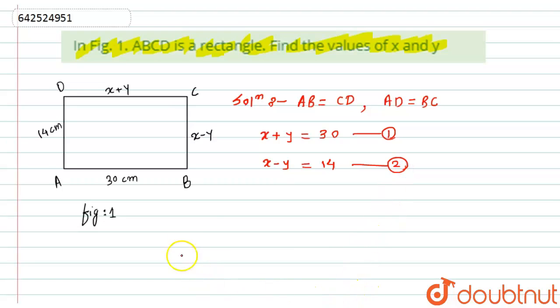Now after adding this equation number one and two, what we will get is twice x equals 44. So here I will get the value of x as x equals 44 divided by 2, which will be equal to 22 centimeter.